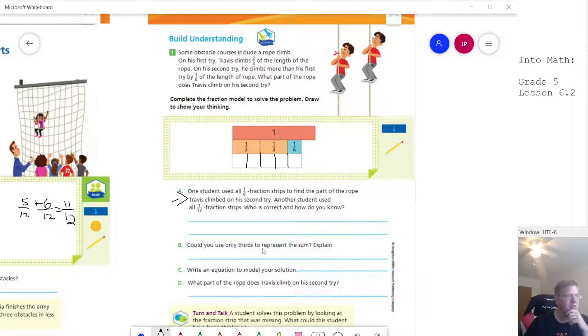Could you use only thirds to represent the sum? No. We can't because we're going to have two thirds plus one sixth. And so, again, we're going to get five sixths for our answer for the second try.